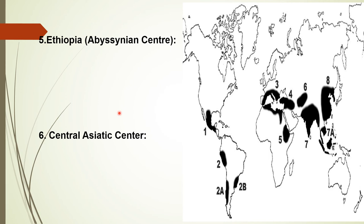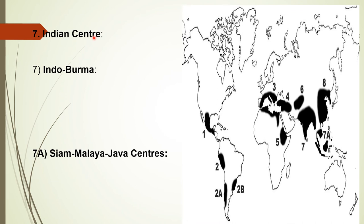Fiber plants from the Central Asiatic center include hemp and cotton. Vegetables include onion, garlic, spinach, and carrot. Fruits include pistachio, almond, grape, and apple. The Indian center has two sub-centers in India and Burma. The main center includes Assam and Burma, and it is the primary center of origin of cereals and legumes like rice, chickpea, pigeon pea, moong bean, rice bean, and cowpea, and vegetables and tubers like eggplant, cucumber, and radish, fruits like mango, orange, citron, and tamarind.